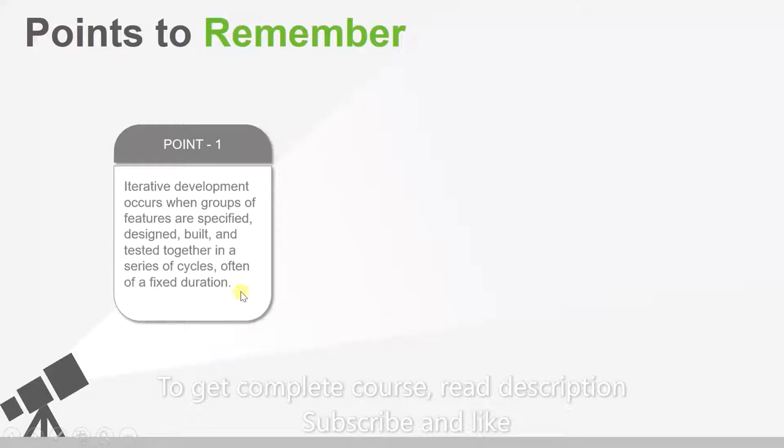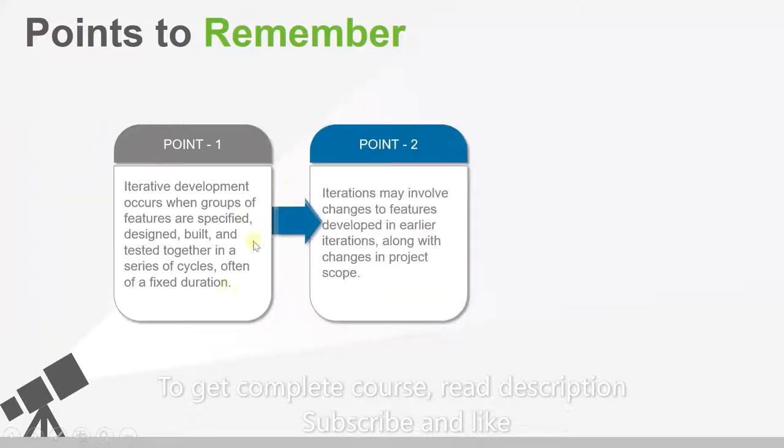Now point two: Iterations may involve changes to features developed in earlier iterations, along with changes in project scope. So once you developed a feature in phase one, the customer gives feedback on it. If he doesn't like something, then you go to phase two and make the changes he wants in the phase one features, as well as the next feature that you're developing. So in this way, you will have a change request as well as a new feature.